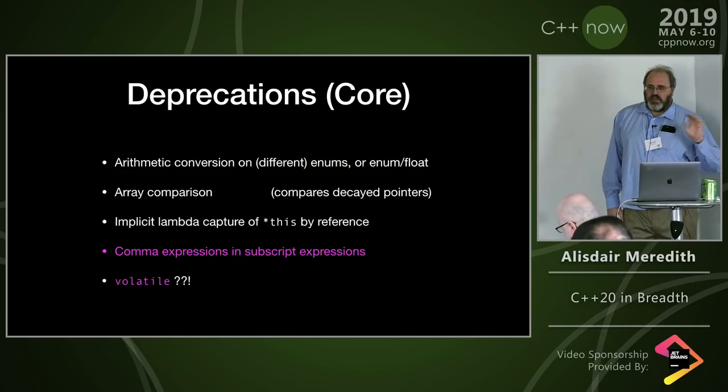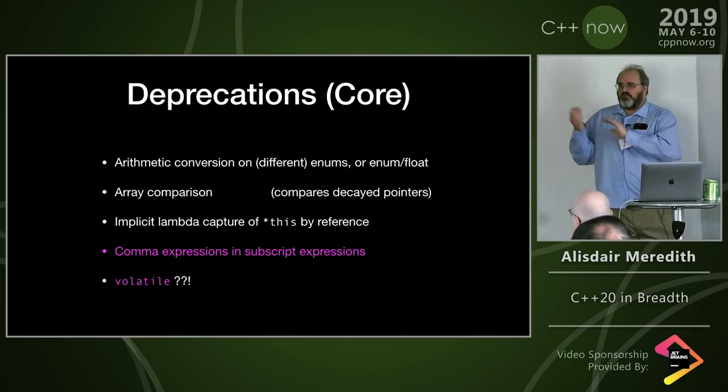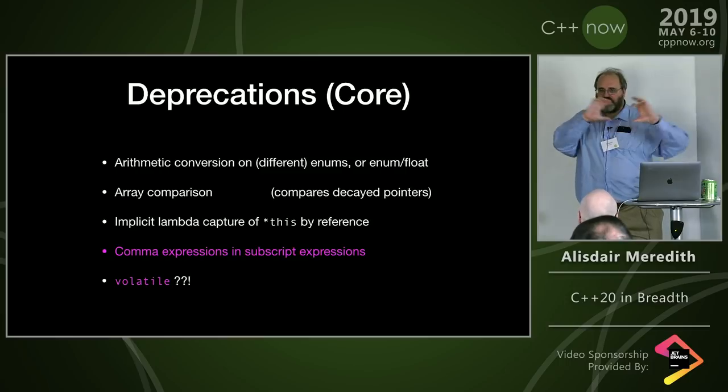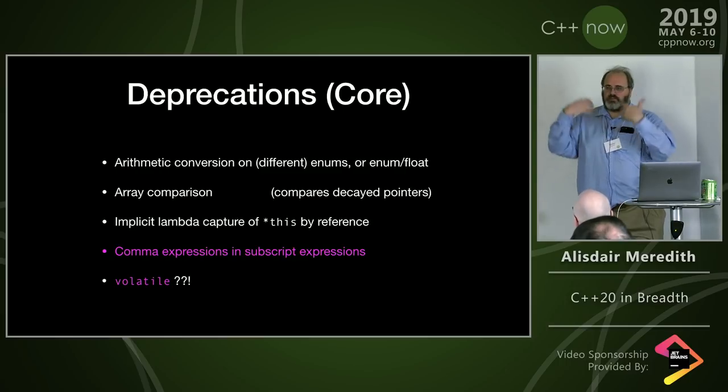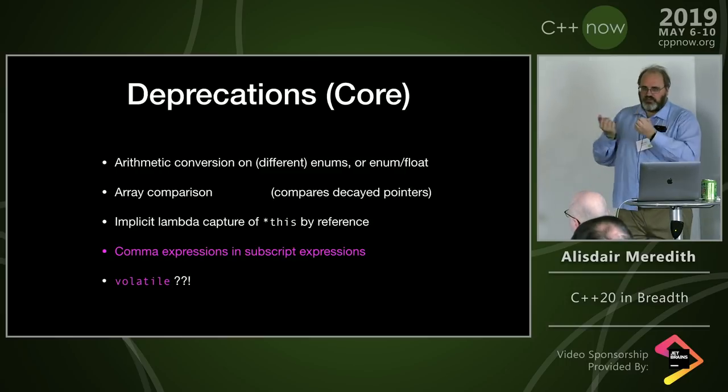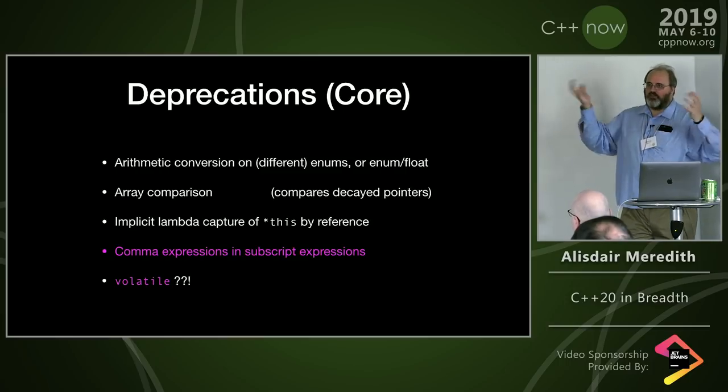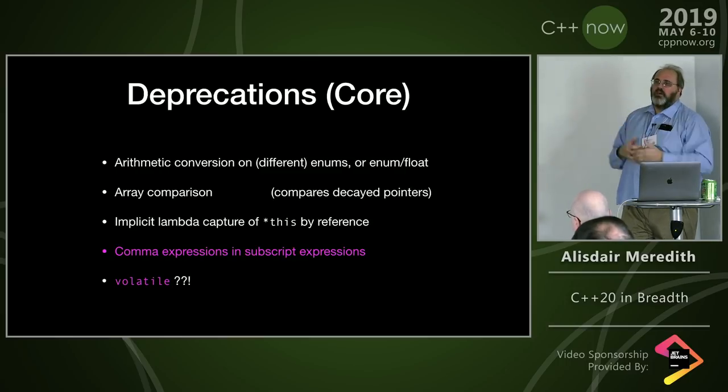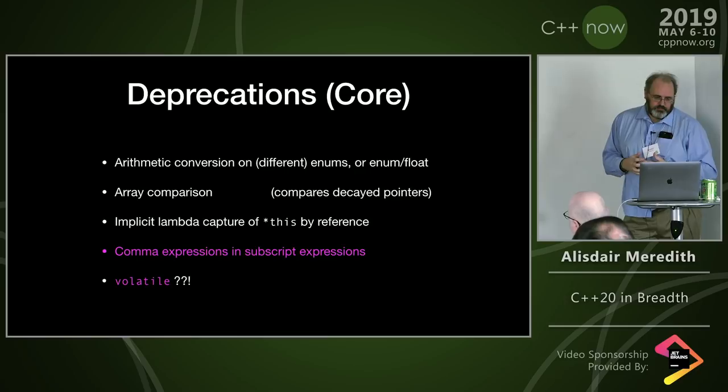With lambdas, the implicit capture of the 'this' pointer was subtle and confusing — when you use 'this' in a lambda, does it mean the lambda's this or the captured context's this? The implicit capture of this is now deprecated with a view to removing it in the future. The intent is that you can explicitly add 'this' to your capture list to capture the this pointer from the context where you're using the lambda.